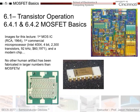Now we're finally going to do MOSFETs. This is probably the most important semiconductor device if you look at modern electronics. We have the first commercial integrated circuit based on MOSFETs from 1964, the Intel 4004, a 4-bit processor with a little over 2,000 transistors, a blazing speed of 92 kHz. If you wanted it back then, it would cost you about $60,000. It's interesting to see how far we've come.